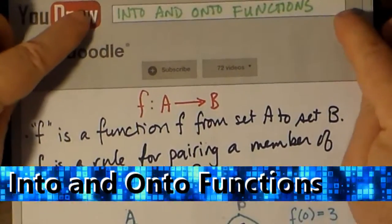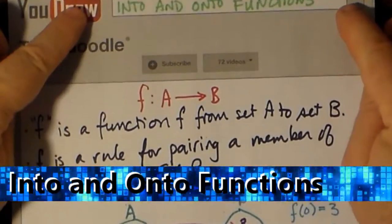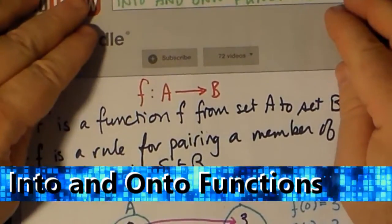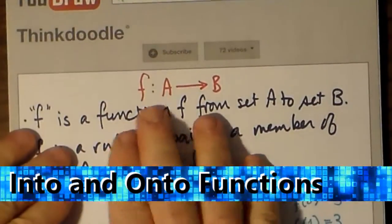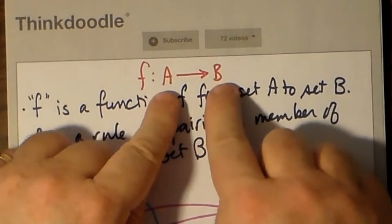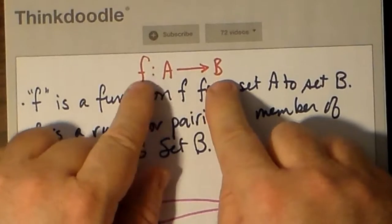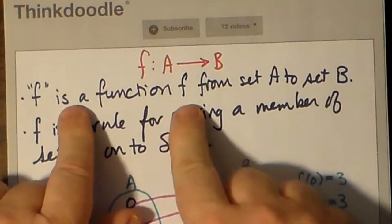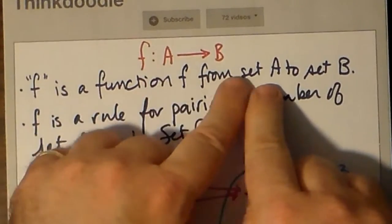Into and onto functions. Now you might see a rather strange notation: f followed by a colon and then A with an arrow pointing at B. A and B are sets and f is a function. This is a kind of function notation where the domain and range are treated as sets of numbers.